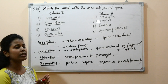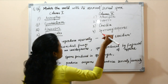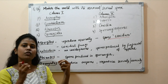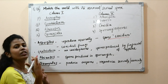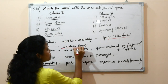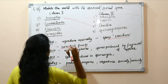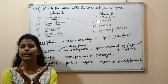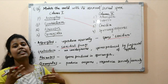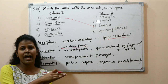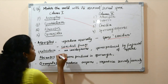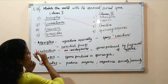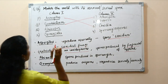Aspergillus reproduces asexually and produces spores called conidia (singular: conidium). These conidia are produced in a structure called a conidiophore. Aspergillus is also known as conidial fungi because it produces conidia as its spores. Next is Geotrichum, which is different from Aspergillus — it has no conidiophore. It produces spores by fragmenting its hyphae, and the spores are variable in length and unicellular. These spores are called arthrospores.